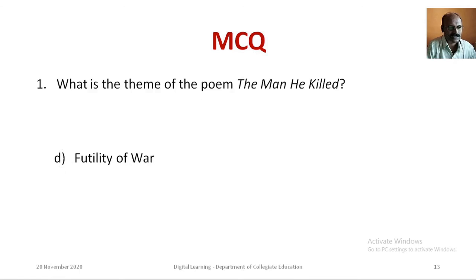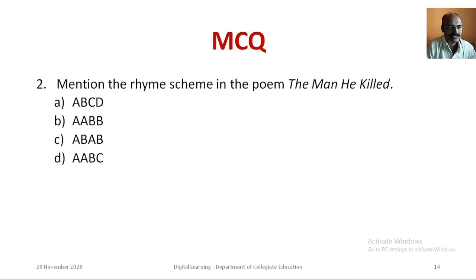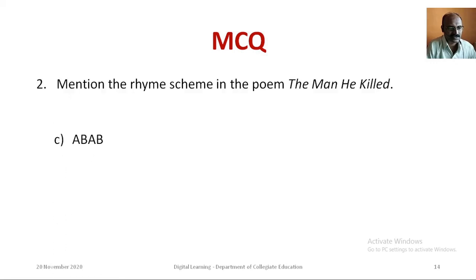Question 2: Mention the rhyme scheme in the poem 'The Man He Killed.' Option A: ABCD. Option B: AABB. Option C: ABAB. Option D: AABC. The correct answer is Option C: ABAB.